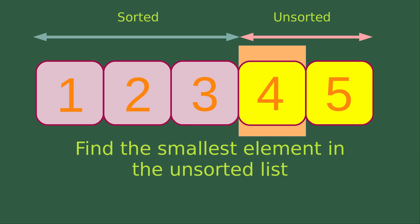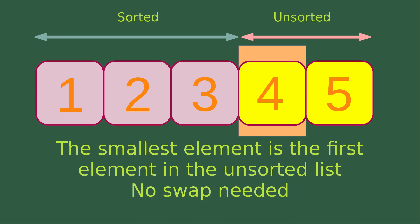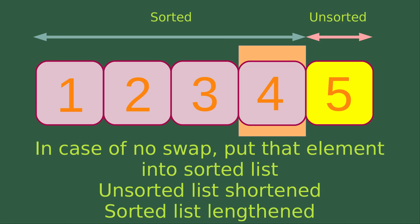I continue the process in the unsorted list. I would like to find the number which is the smallest one in the unsorted list. I got four in the unsorted list being the smallest number. So I can see that the smallest element is the first element in the unsorted list. So for this case, I don't need to swap it with any other number in the unsorted list. In case of no swap, I would simply put that element in the sorted list component. So I would pack number four to the sorted list part. I can again say that the sorted list is lengthened while the unsorted list is shortened.